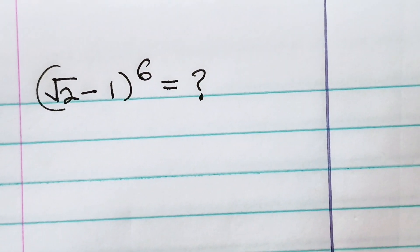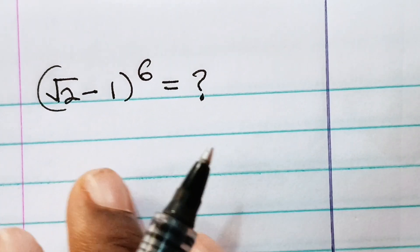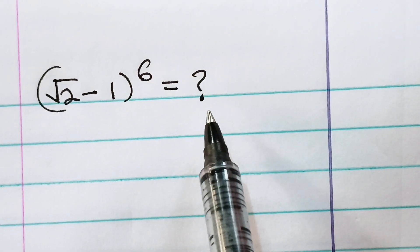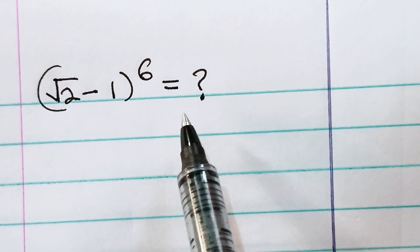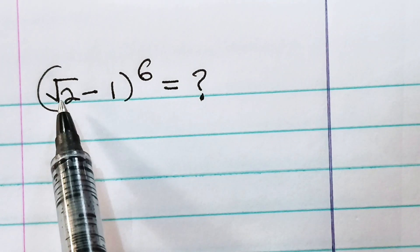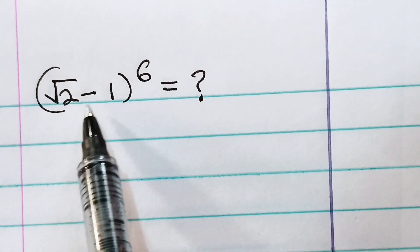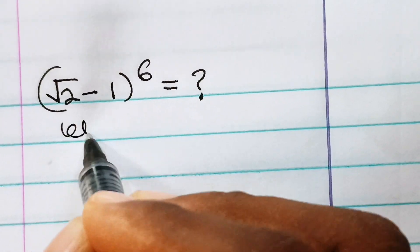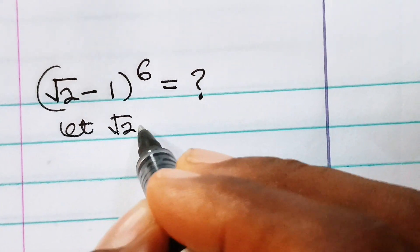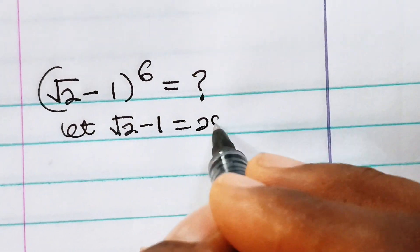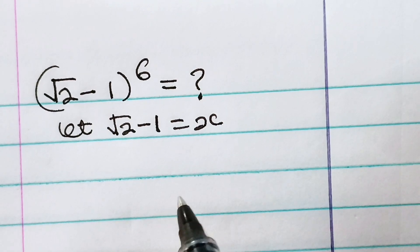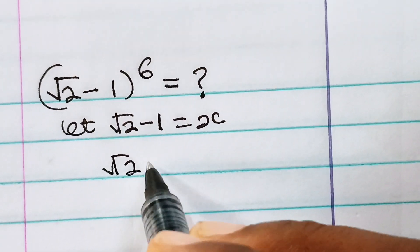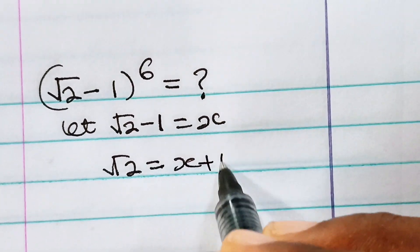Hello, let's solve or simplify what we have here. Whenever you have this type of question, the first thing I suggest you do is to simplify. So you need to call whatever you have inside your bracket something. We can say, let square root of 2 minus 1 be equal to x. Now having said that, we can say that square root of 2 is equal to x plus 1.